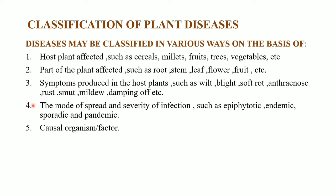The symptoms produced in the host plant include diseases like wilt, blight, soft rot, anthracnose, rust, smut, mildew, and damping-off, etc. Not only the host plant affected, part of the plant affected, and symptoms produced, but also the mode of spread and severity of infection causes plant diseases. These include epiphytotic, endemic, sporadic, and pandemic.